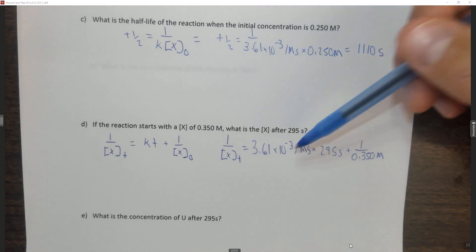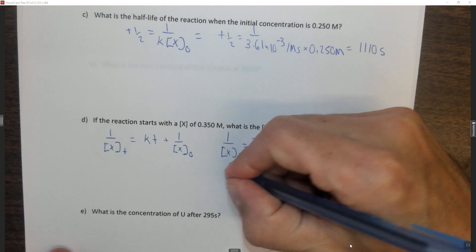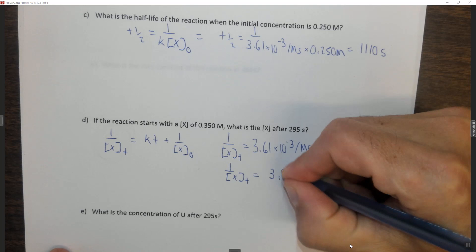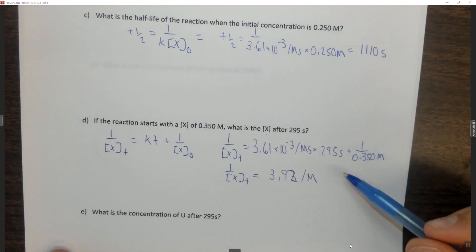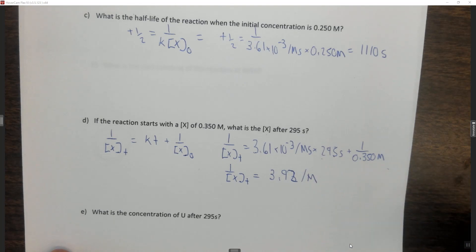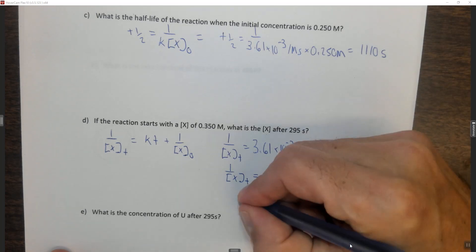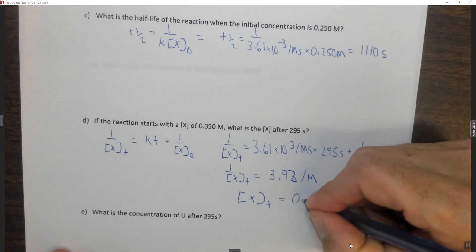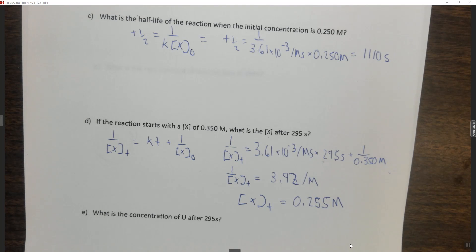So we multiply these two together and add it to the reciprocal of this one, and we find that 1 over X at some t is equal to 3.92 per molar. So you take 1 over this one and then you take these two and multiply together and then you add those two things together and you get 3.92. You now need to take the reciprocal of this. So you want to take 1 over 3.92, and you find that the concentration of X at some time is equal to 0.255 molar. So it's going to be 0.255 molar after the 295 seconds.